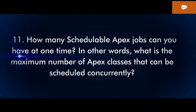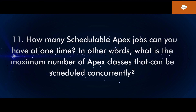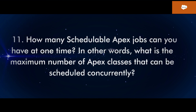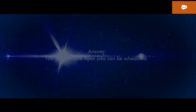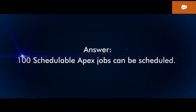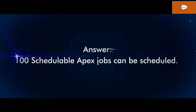Q11: How many schedulable Apex jobs can you have at one time? In other words, what is the maximum number of Apex classes that can be scheduled concurrently? Answer: 100 schedulable Apex jobs can be scheduled.